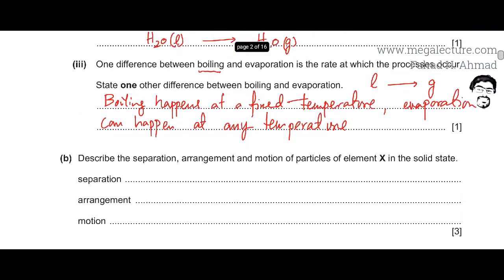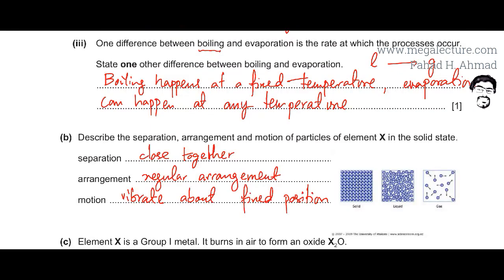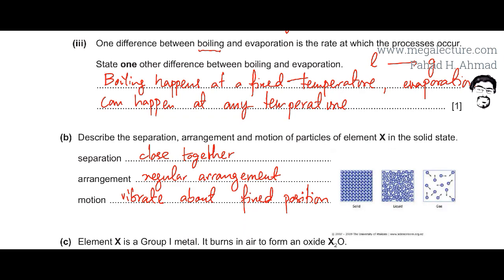Moving to part D: describe the separation, arrangement, and motion of particles of element X in the solid state. Quickly going over kinetic particle theory — in solids, particles are tightly packed together; in liquids, they are loosely packed with slight gaps; in gases, particles are far apart. In solids, particles can only vibrate about their fixed position — they vibrate to and fro but cannot move freely. In liquids, particles can slip and slide past each other as they are more energetic and can overcome intermolecular forces. In gases, particles are even more energetic and the intermolecular forces are relatively weaker, so particles can move freely in all directions.